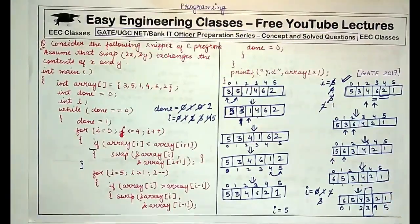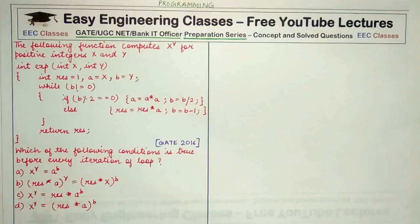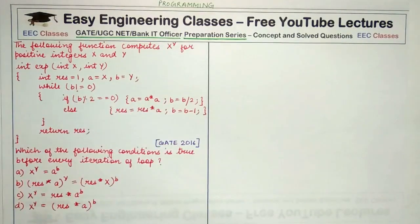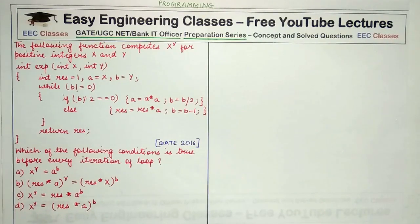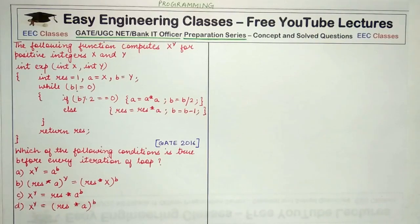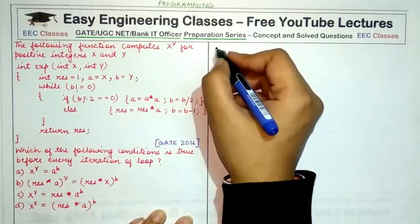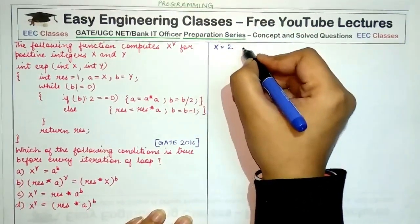Be careful in executing all the iterations — don't mix the indices with the values, as many students make these mistakes. Moving to the next question: you are given a code and told that the following function computes x raised to power y for positive integers x and y. You are asked which condition is true before every iteration of the loop. Let's take x equal to 2 and y equal to 5.